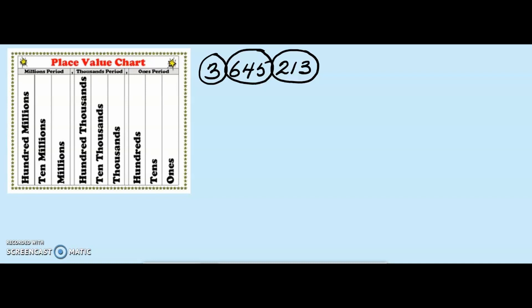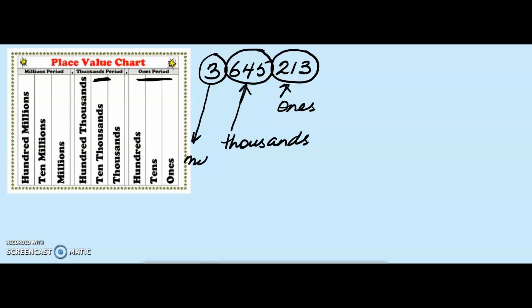Now, each group is called a period. The period from the utmost right is called my 1s period. This group here is going to fall into my 1s period. And you can see the different periods in the place value chart. Then this 3 is going to fall into its own period.